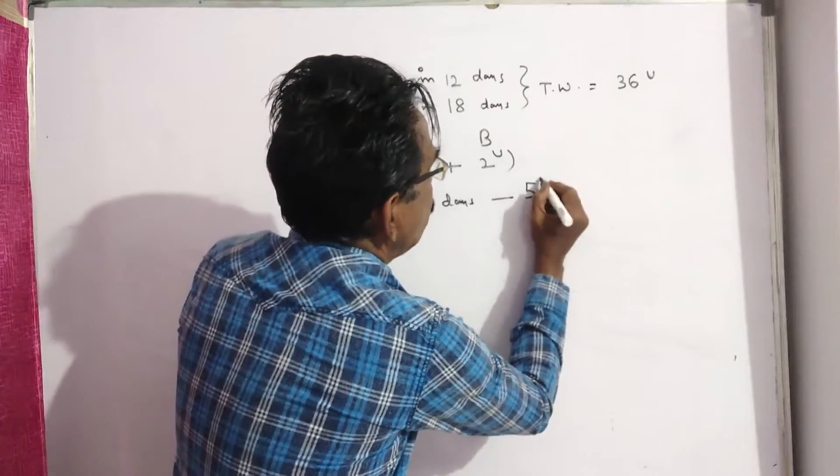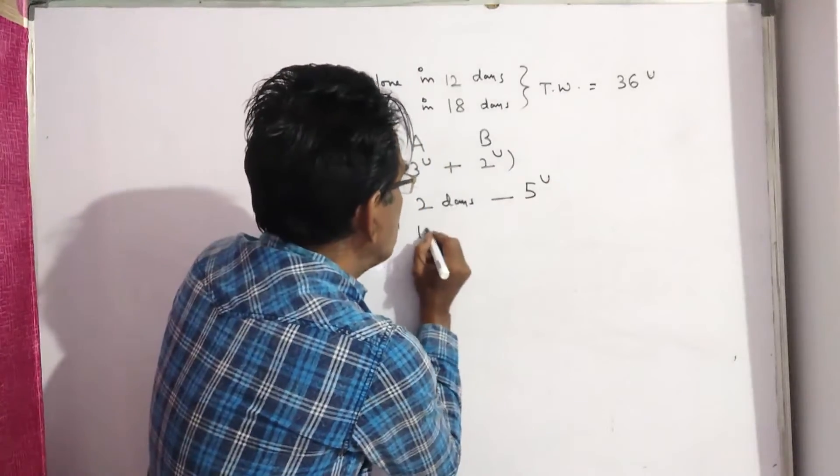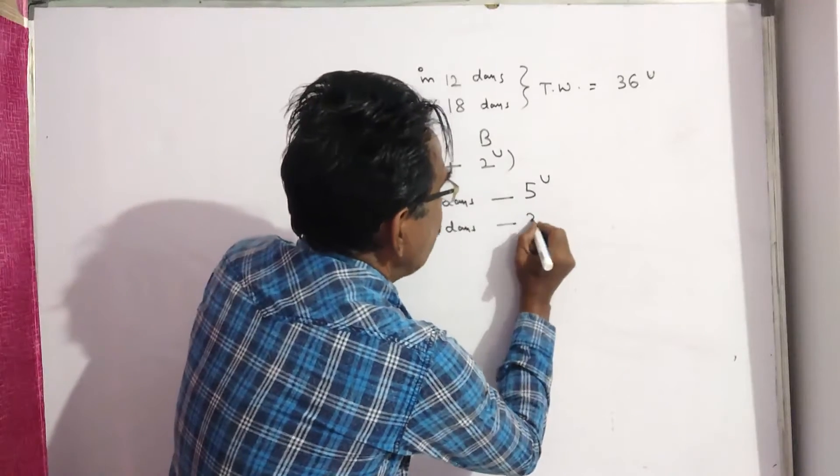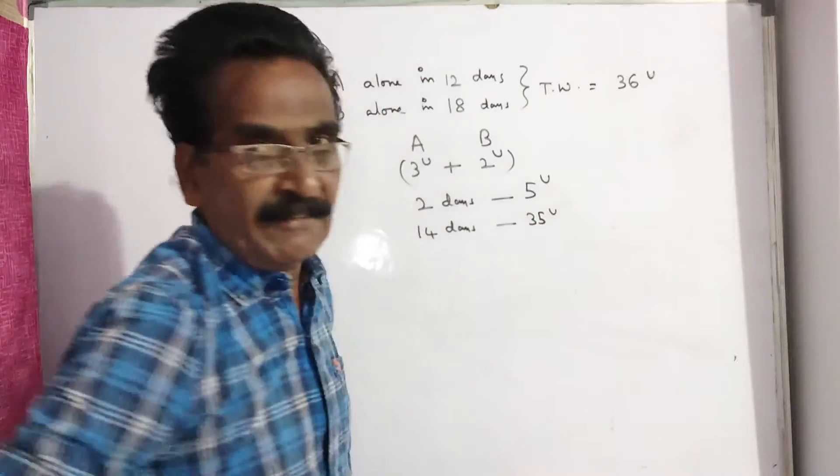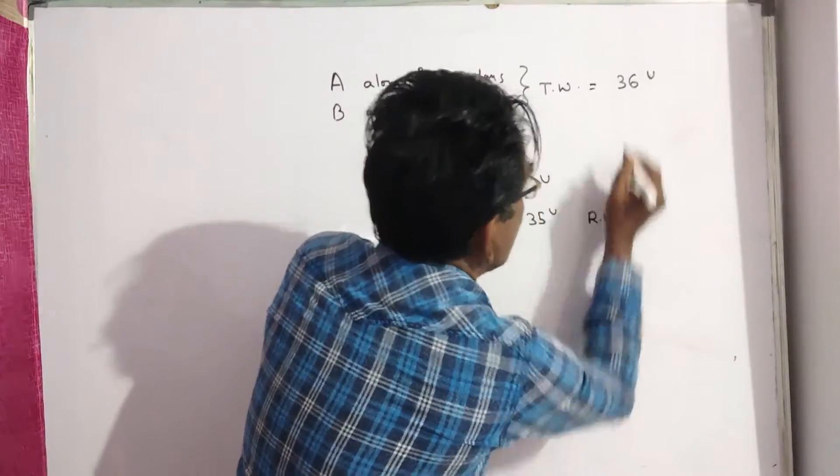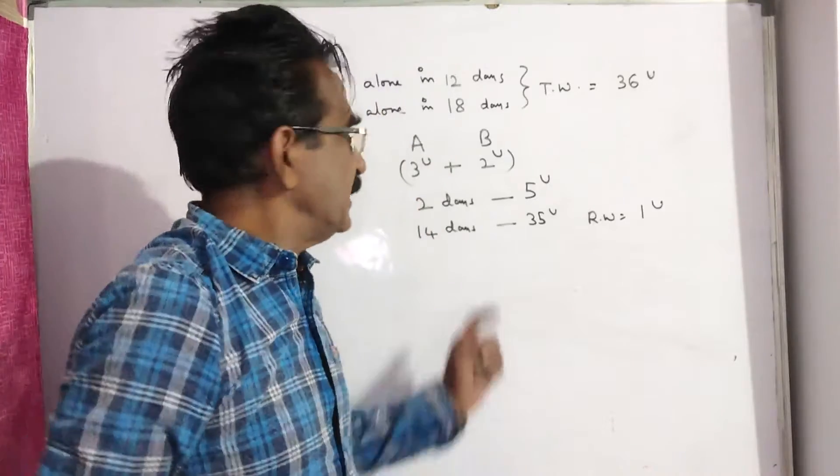In two days, 3 plus 2 equals 5 units of work is completed. Now seven twos, in 14 days, seven fives equals 35 units of work will be completed. Remaining work is 36 minus 35, which is 1 unit.